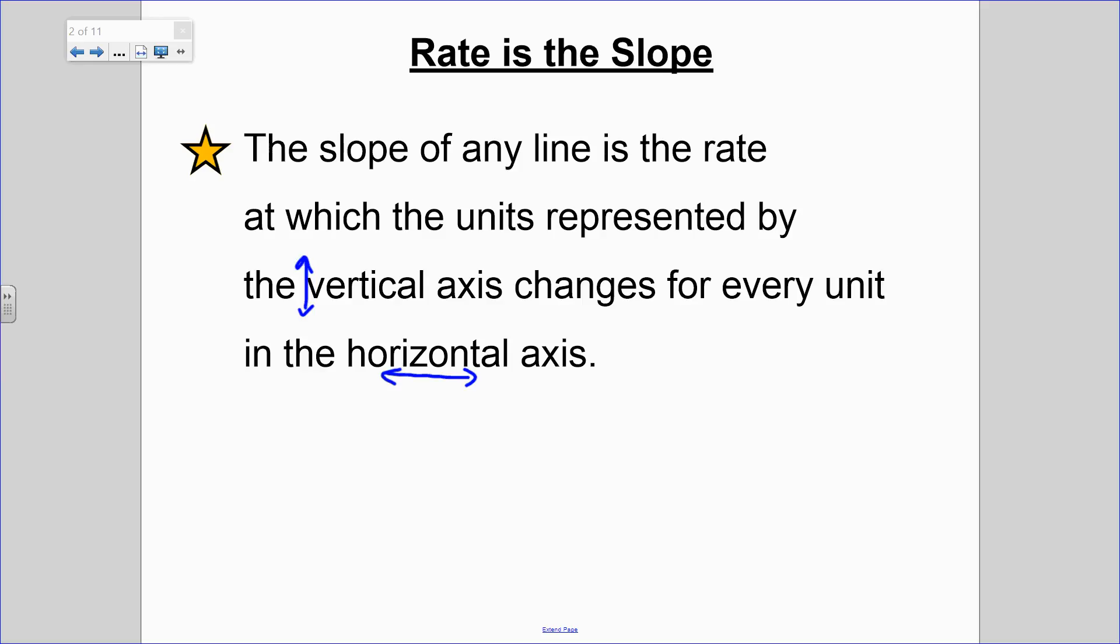This is a big idea in just math in general that will go all the way to calculus. I mean, trust me when I say that this idea that you're writing down, that the rate of anything is a slope of that thing or the speed of that thing, whatever that thing is, whatever is being observed or monitored or studied, the speed is a slope or the rate is a slope. I'm going to write this down. The slope of any line is a rate at which the units represented by the vertical axis changes for every unit in the horizontal axis.